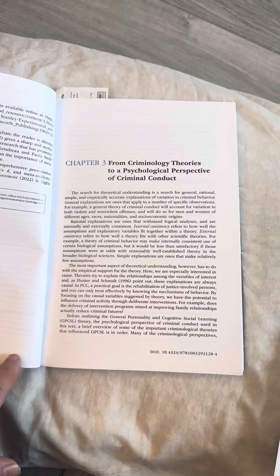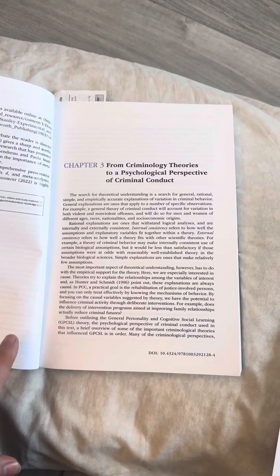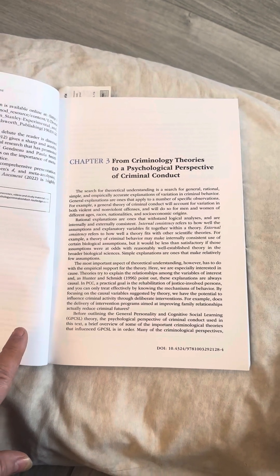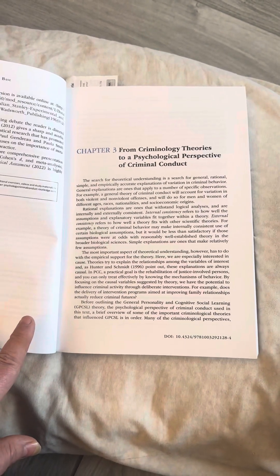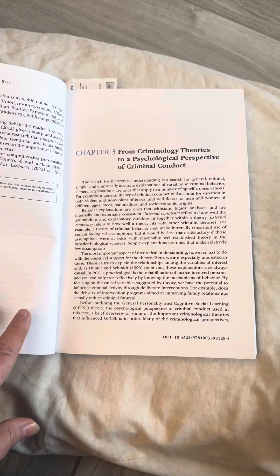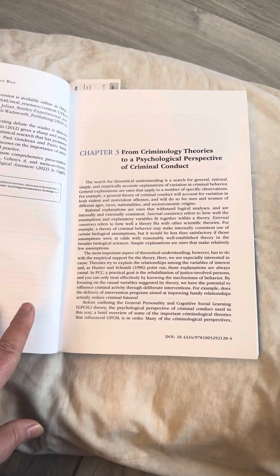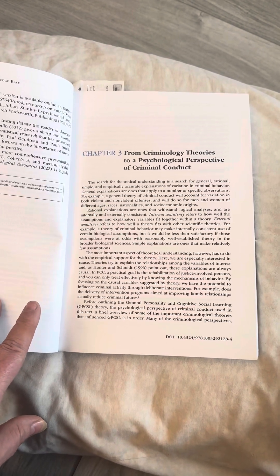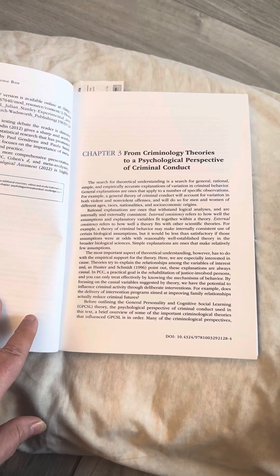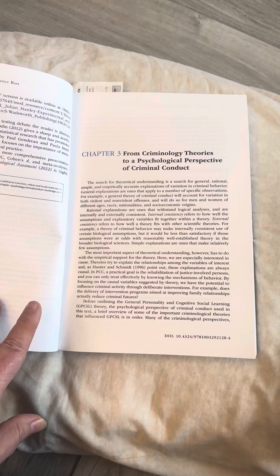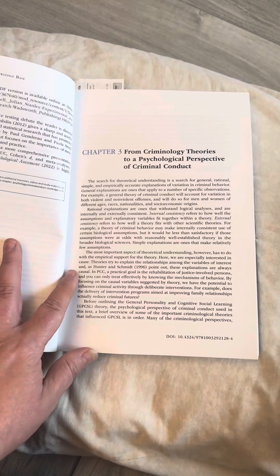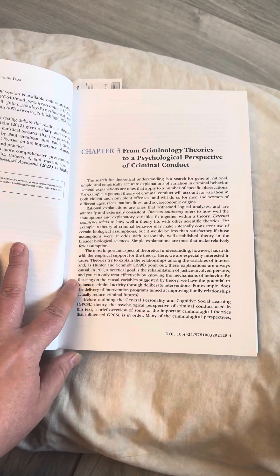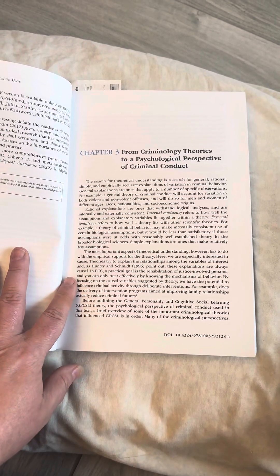Simple explanations are ones that make relatively few assumptions. The most important aspect of theoretical understanding, however, has to do with the empirical support for the theory. Here, we are especially interested in the cause. Theories try to explain the relationships among the variables of interest. And as Hunter and Schmitt, 1996 point out, these explanations are always causal.